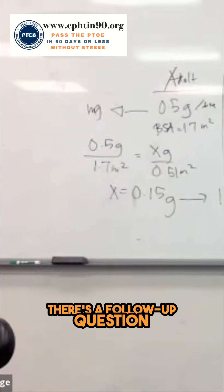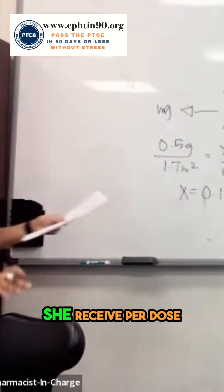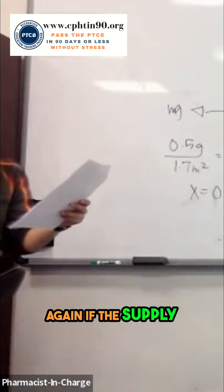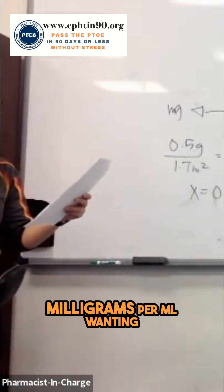There's a follow-up question. How many milliliters should she or he, per dose, again, if the supply of Amoxil is 250 milligrams per ml?